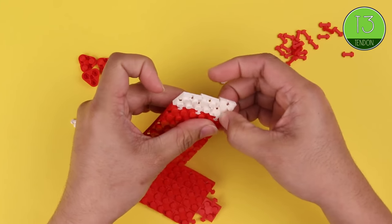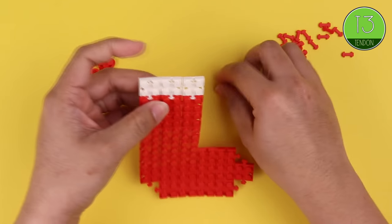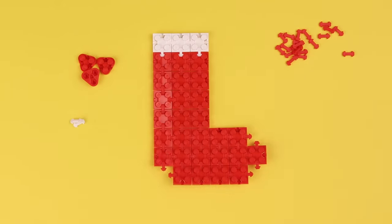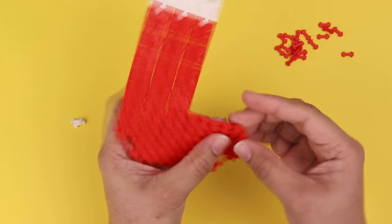Our Christmas stocking is trimmed with white bricks at the top and we're using white tendons as well. And here we are filling in the toe and heel with the triangle bricks.